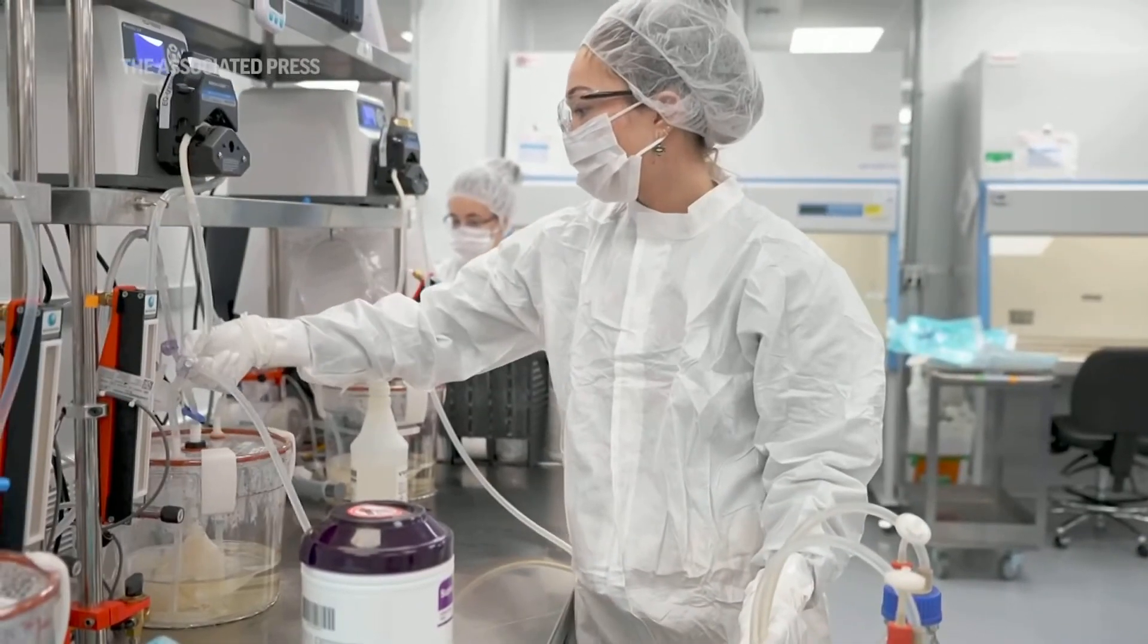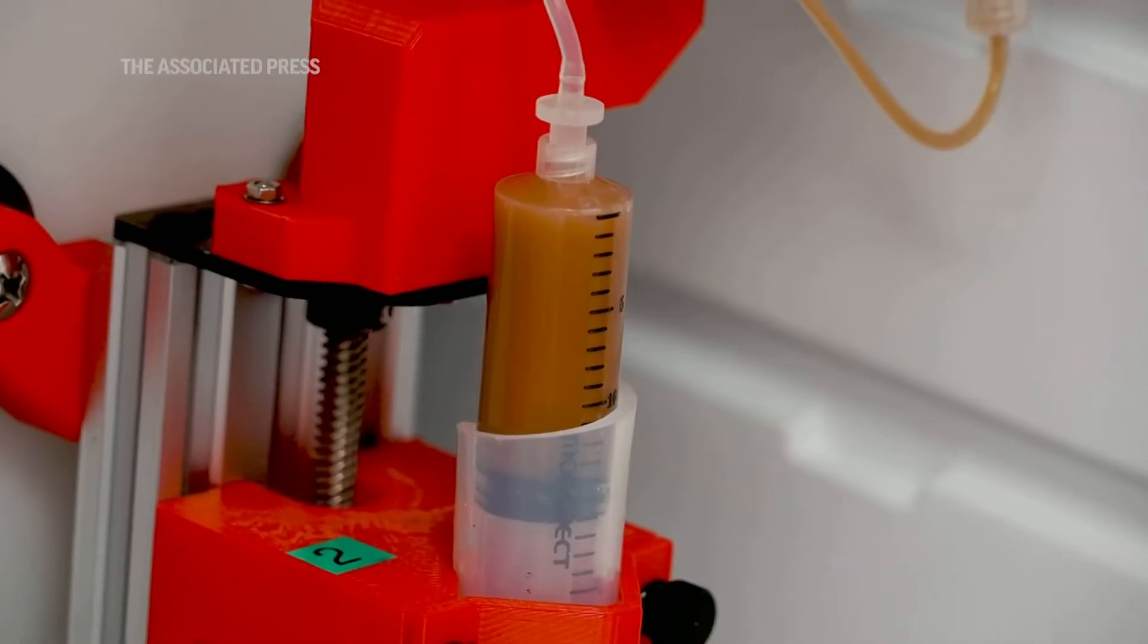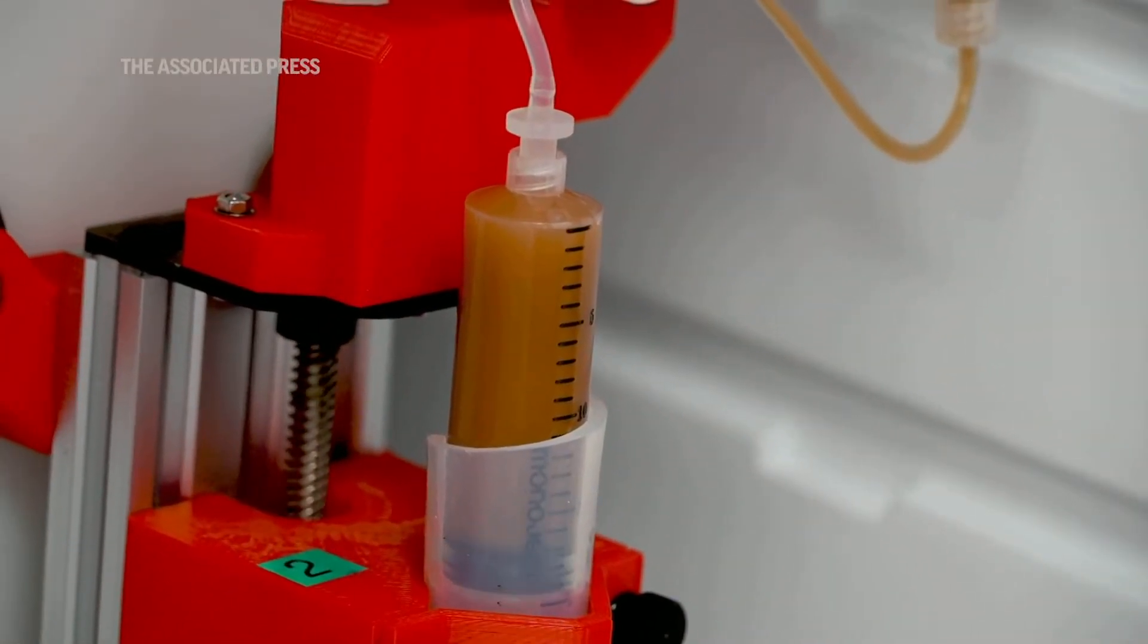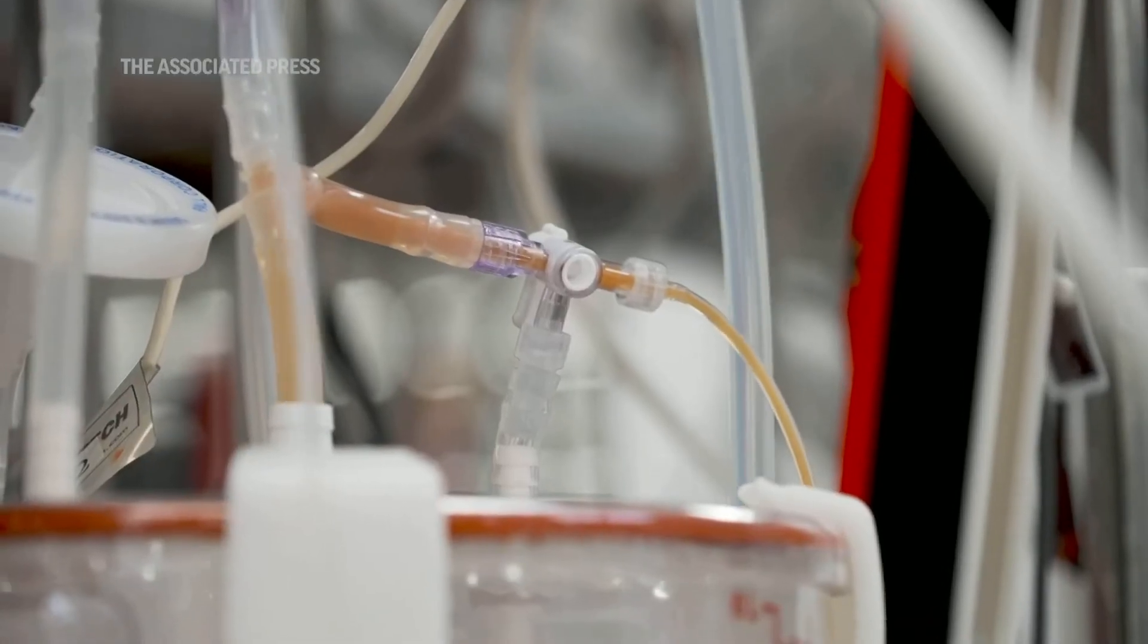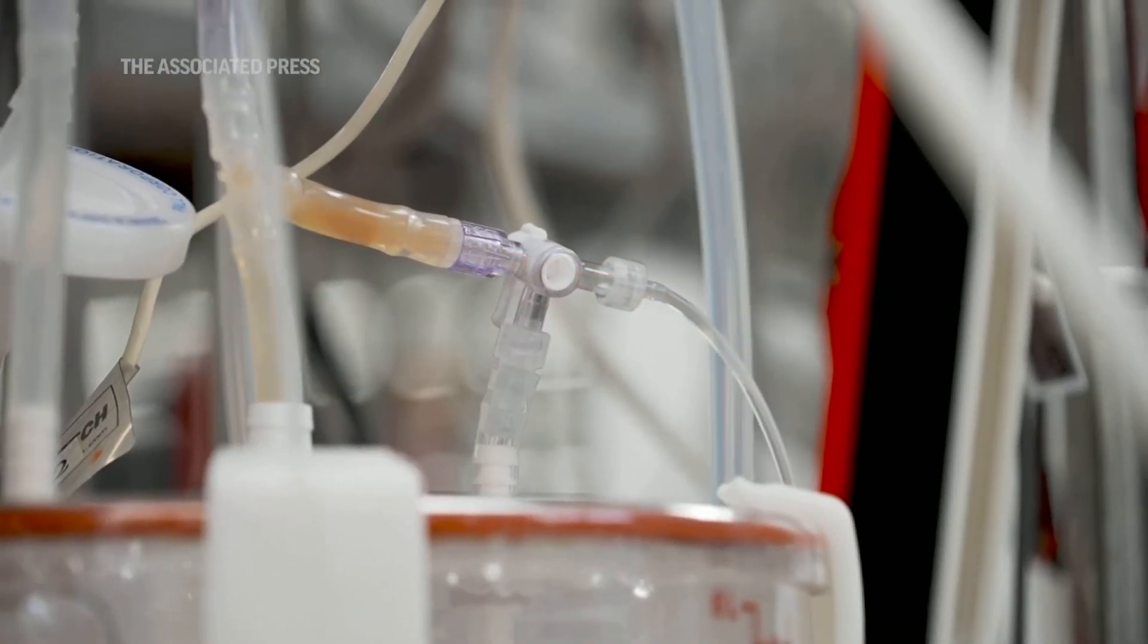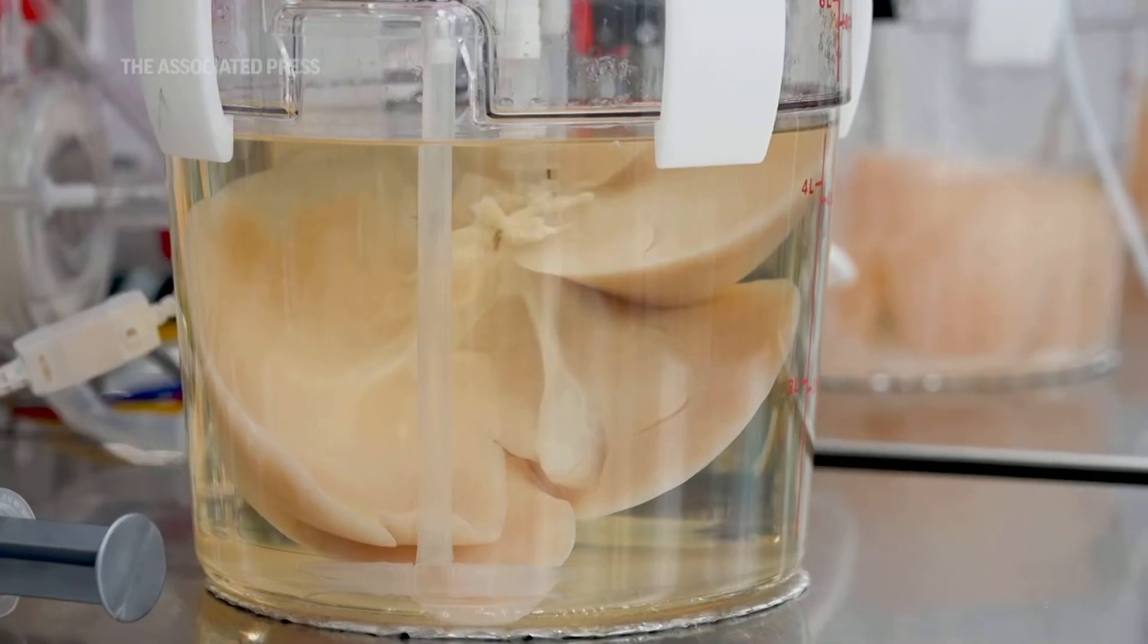So at that point, we then take those human cells that we've isolated from organs that weren't placed for transplant. We infuse those into the organ itself, allow those to engraft, and then bring back the functionality of the organ. And essentially regrow the organ. But now, instead of having a pig organ, now it's a human organ.